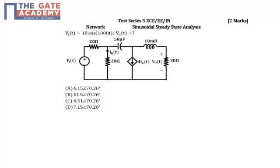Hello friends, this question is from test series 5 in the subject of network, and the topic name is sinusoidal steady-state analysis. It's a 2 marks problem. In the problem we have an RLC network with a dependent source and the input voltage is given as 10 cos 1000T. Operating frequency is 1000. We have a capacitor and inductor.